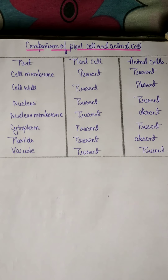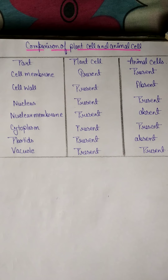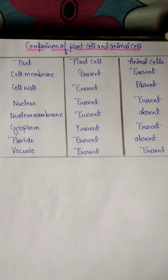Cell wall: present in plant cells and absent in animal cells. Nucleus: present in plant cells and also present in animal cells. Point 40: Nuclear membrane — present in plant cells and absent in animal cells. Cytoplasm: present in both. Plastids: present in plant cells and absent in animal cells. Vacuole: present in plant cells and absent in animal cells.